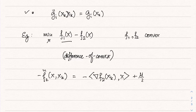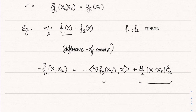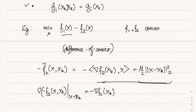For −f_2, we construct the approximation: −∇f_2(x_k)ᵀ(x − x_k) + (μ/2)‖x − x_k‖². Because of the quadratic term, the Hessian with respect to x is μI, satisfying strong convexity. The gradient at x_k matches the gradient of −f_2 at x_k, satisfying the gradient-matching condition. Thus concave functions naturally satisfy the requirements.